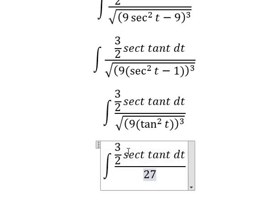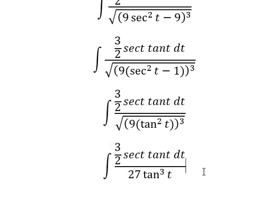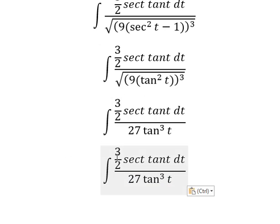And tangent squared t to the power of 3 with the square root, that is tangent to the power of 3. So 3 over 2 divided by 27, that is 1 over 18.